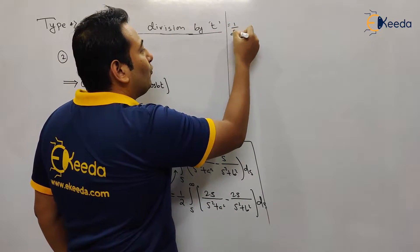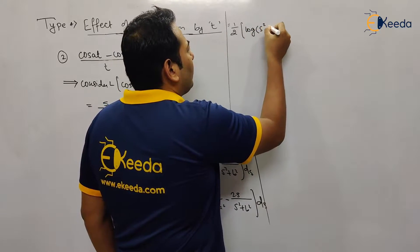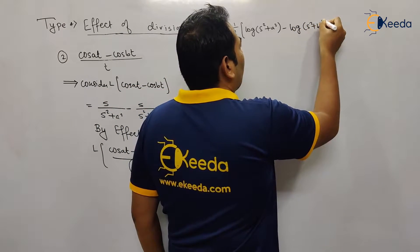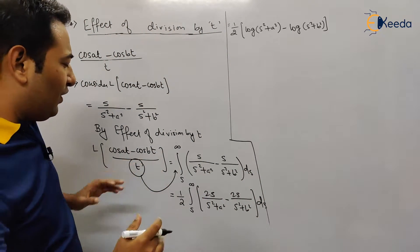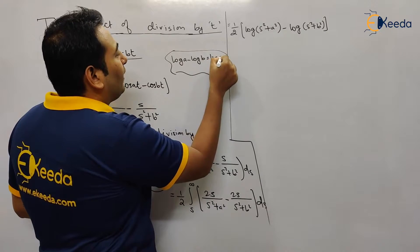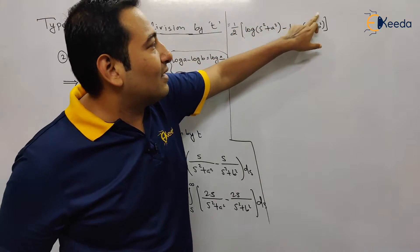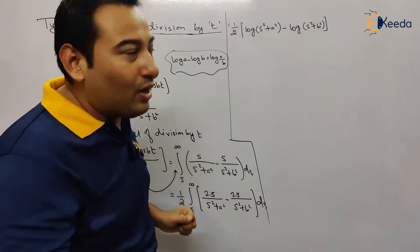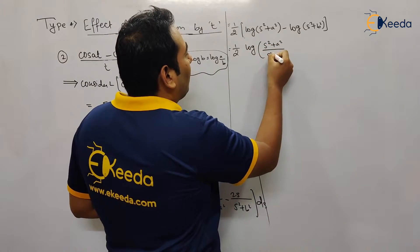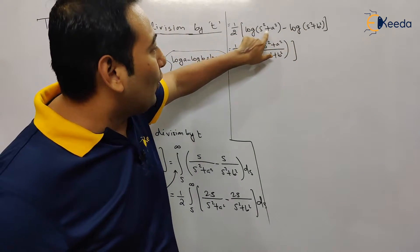Now apply formula five. The integral of 2s/(s²+a²) is log(s²+a²), and the integral of 2s/(s²+b²) is log(s²+b²). So this becomes ½ [log(s²+a²) - log(s²+b²)] evaluated from s to infinity. Using the log property log A - log B = log(A/B), this simplifies to ½ · log[(s²+a²)/(s²+b²)] with limits s to infinity.